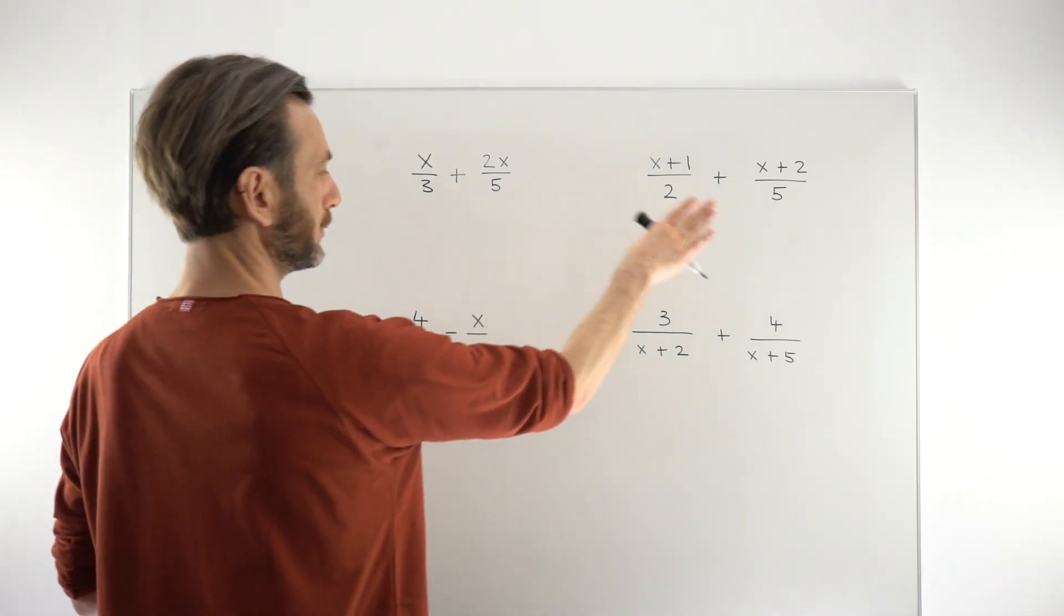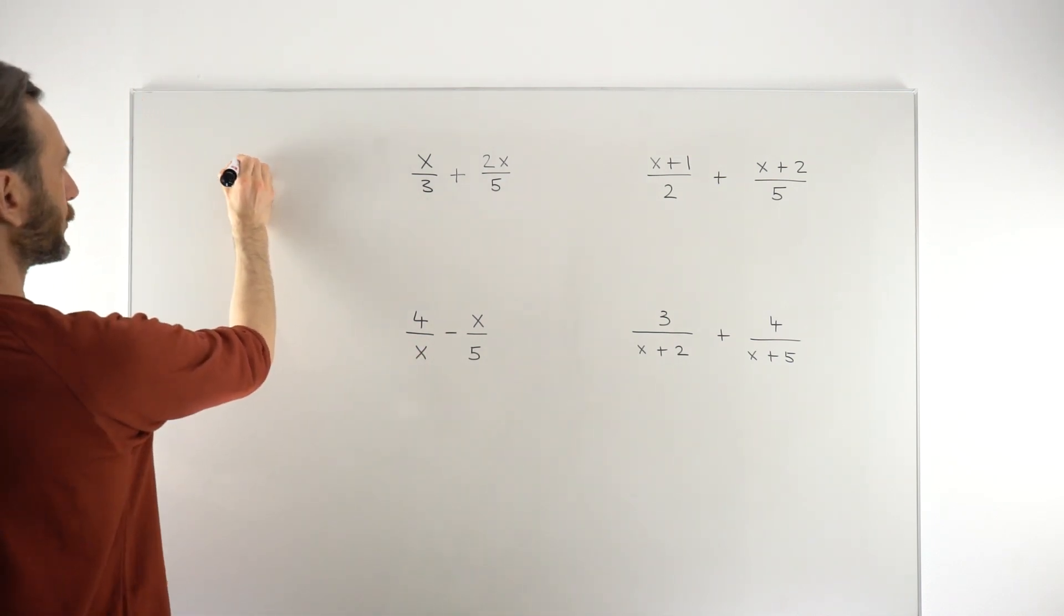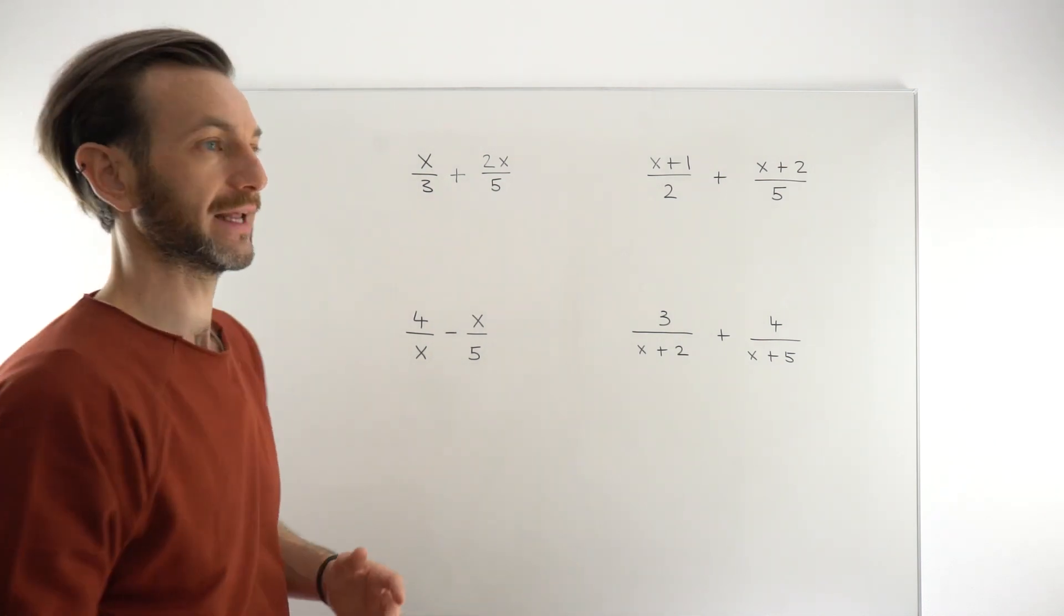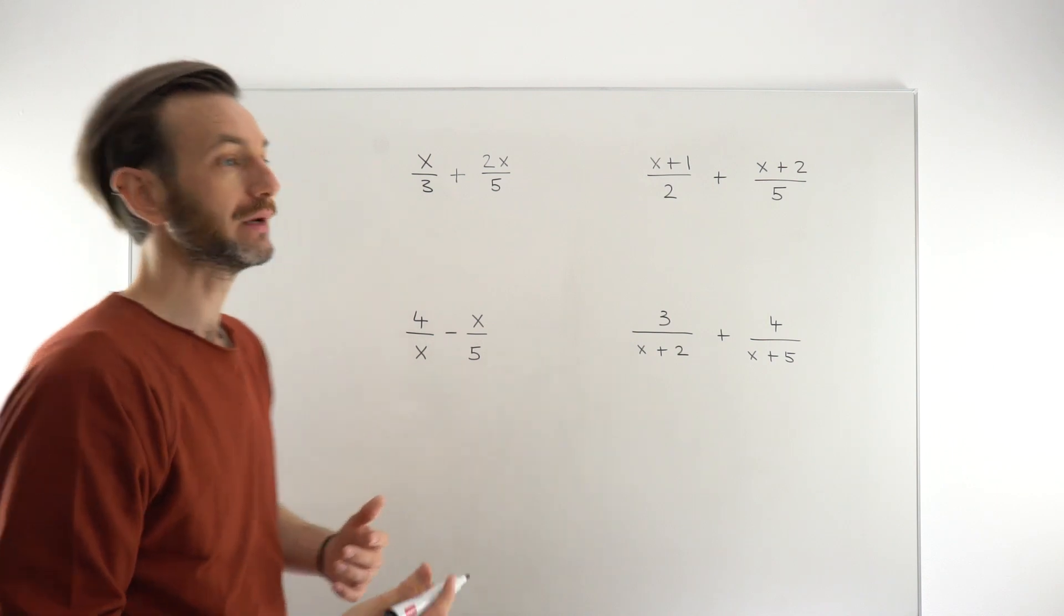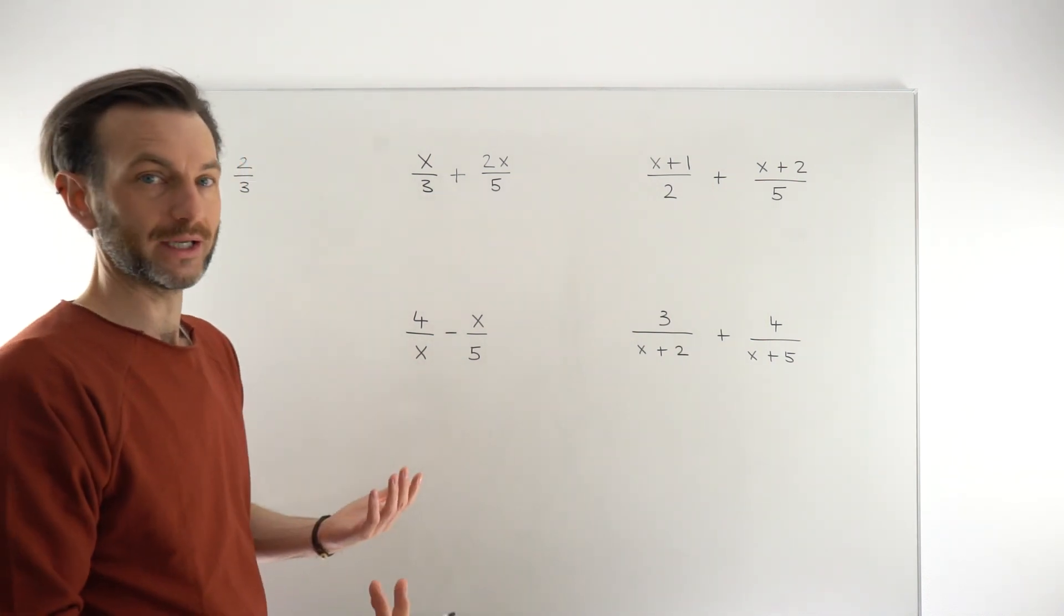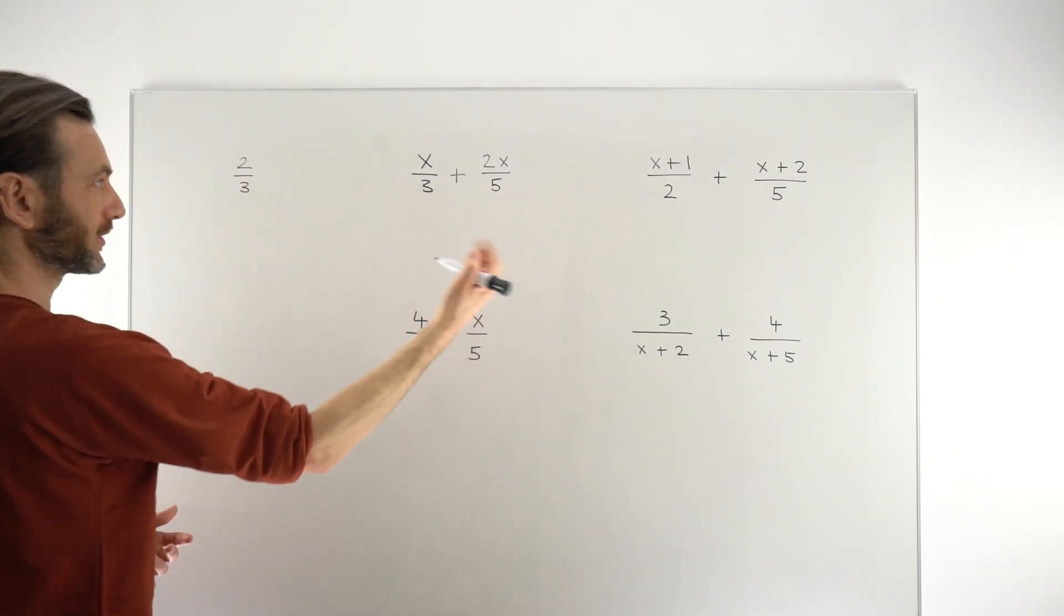So we're going to work these examples in a moment but let's start by considering a number equivalent. It's a little more difficult to add and subtract numerical or algebraic fractions than it is to multiply and divide them, and the main reason for that is when you multiply and divide you don't need a common denominator, but to add and subtract you do need to make these denominators the same.